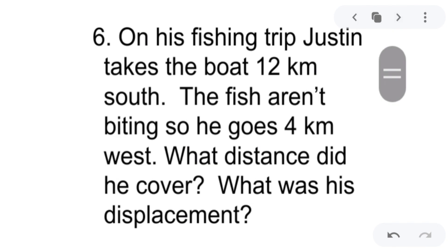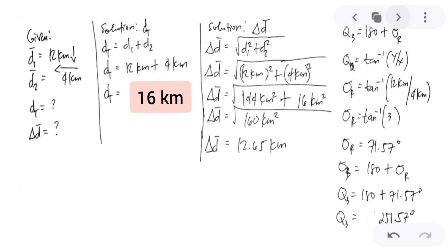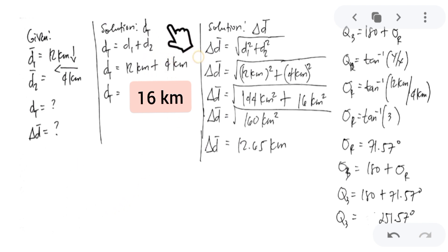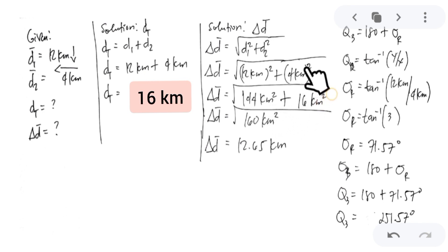Another problem: Justin takes a boat 12 kilometers to the south, then 4 kilometers to the west. What distance did he cover and what was his displacement? For total distance: 12 km plus 4 km equals 16 km. For displacement, using the Pythagorean theorem: square root of (12 km)² + (4 km)² = square root of 144 + 16 = square root of 160 = 12.65 km.